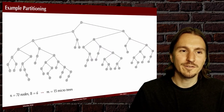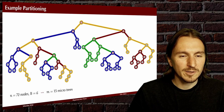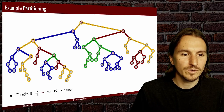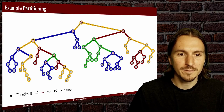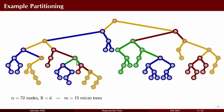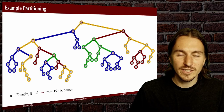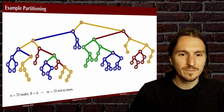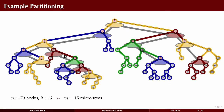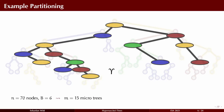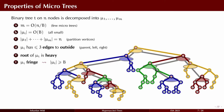Here's an example of how this tree covering works. For a binary tree with parameter b set to 6, these are the micro trees you get. Every component may have an entire subtree on the left omitted and an entire subtree on the right side of the root omitted, but otherwise it's a complete connected component of the tree. Contracting all the components into a single vertex again gives a binary tree.